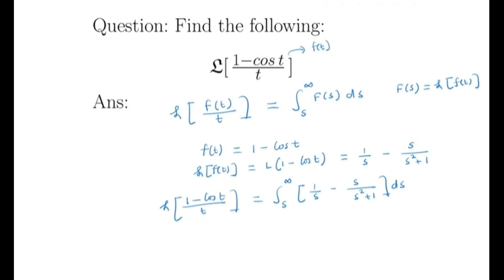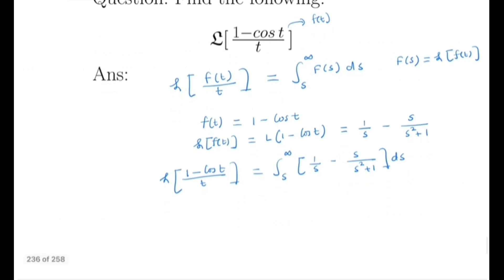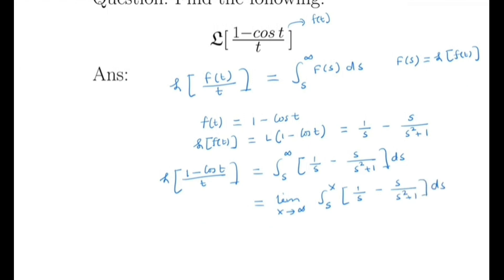Note that this is an improper integral, so we use the limit definition of an improper integral. It becomes the limit as x tends to infinity of the integral from s to x of (1/s - s/(s² + 1)) ds.